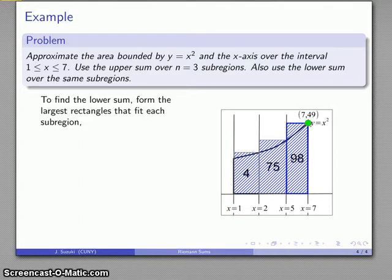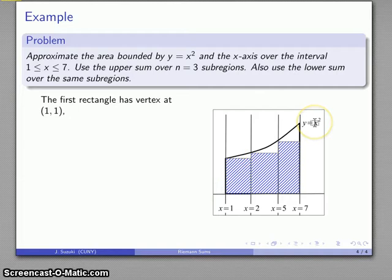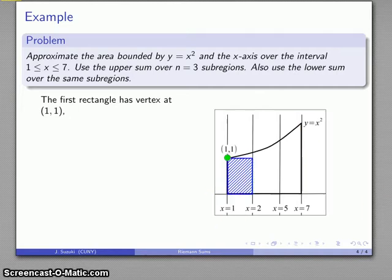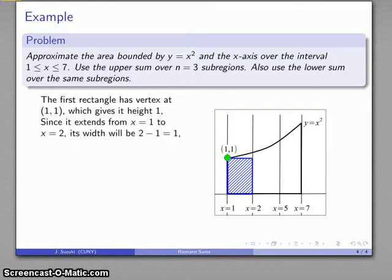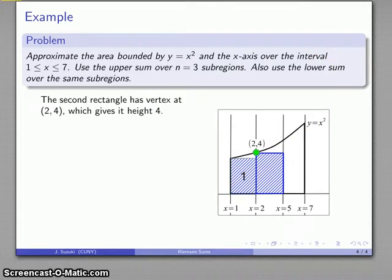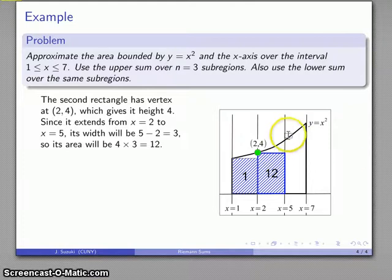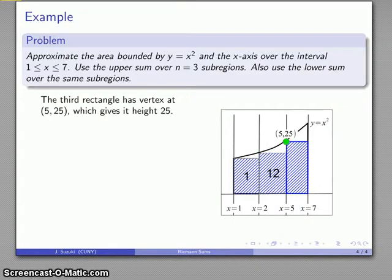For the lower sum, I do almost exactly the same thing using the same sub-regions, but this time I find the largest rectangles that fit into each sub-region. The first rectangle's vertex is on y equals x squared at x equals one, giving me the height and width and therefore the area. The second rectangle's vertex is at x equals two, and the third rectangle's vertex is at x equals five on the graph. The sum of these areas gives my lower sum.